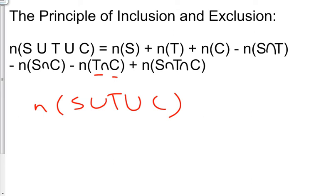So the number of elements in the union of S, T, and C is equal to the number of elements in S, which was 34%, plus the number in T, which was 76%, plus the number in C, which was 66%, minus the union, sorry,